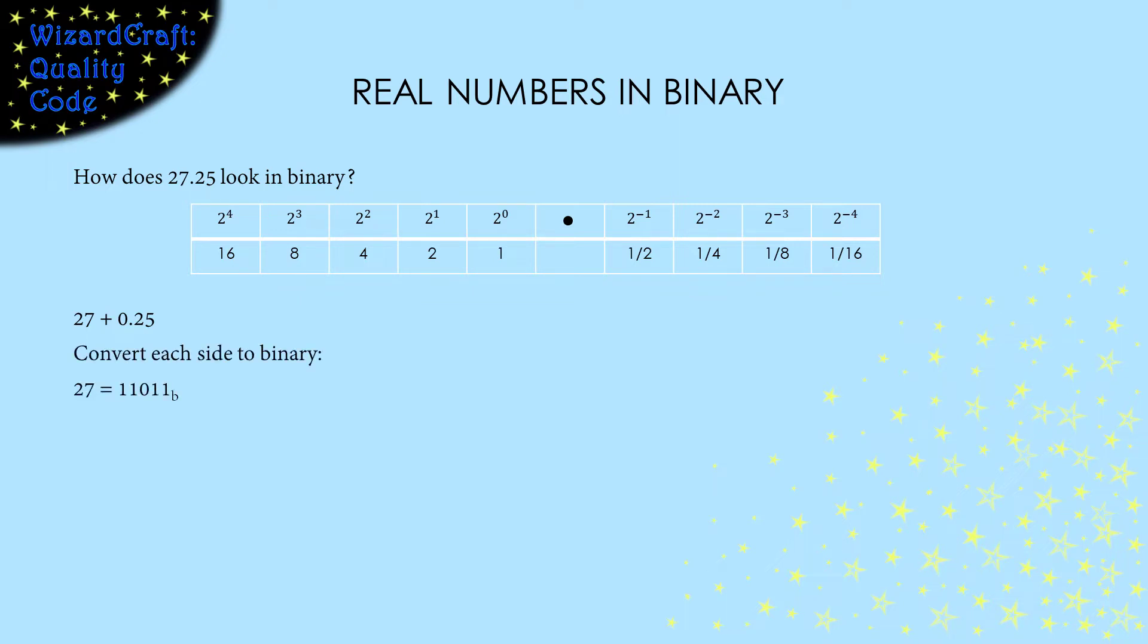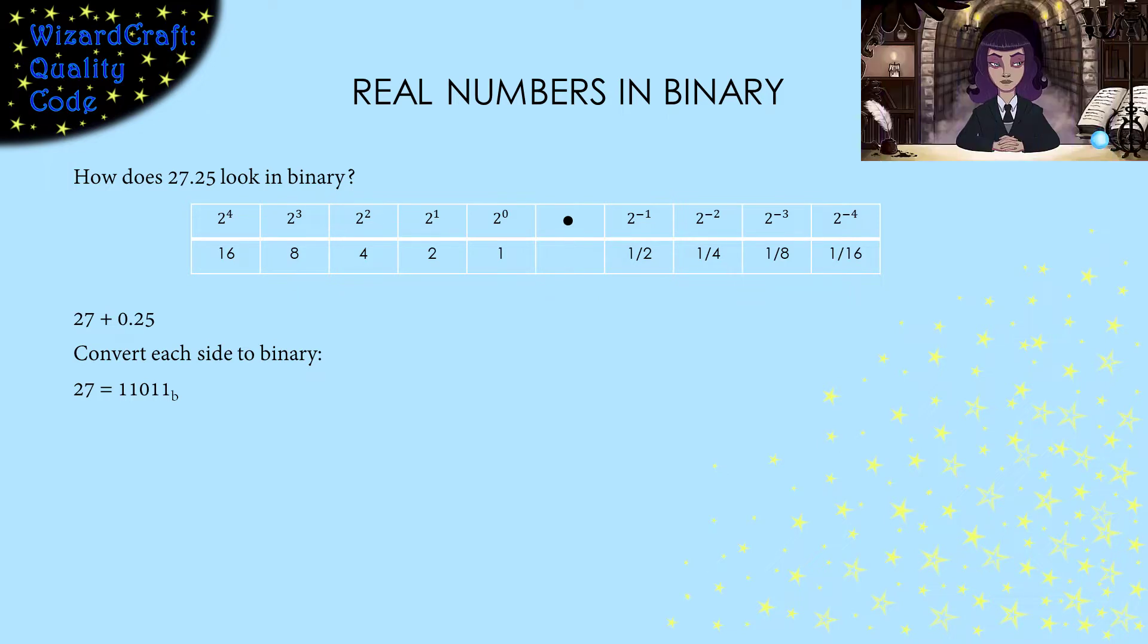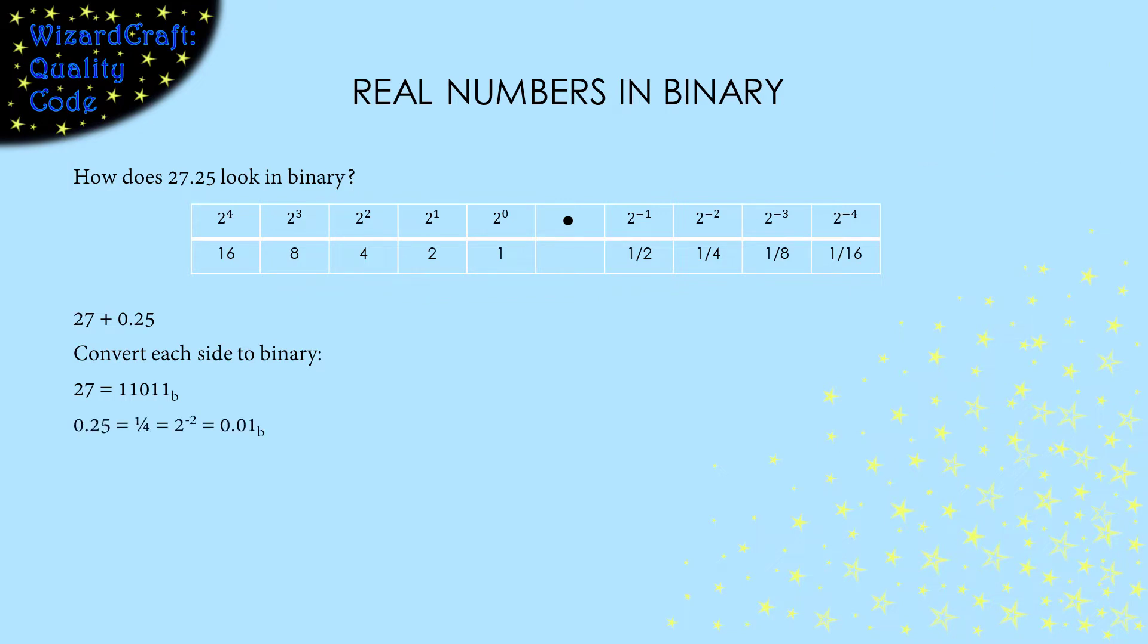In this case, 27 is 11011 in binary. For this presentation, numbers displayed in binary will have a subscript of b for clarity. 0.25 is a quarter, which is 2 to the negative 2, so 0.25 in decimal is 0.01 in binary. We can put those two results together to get the binary result.